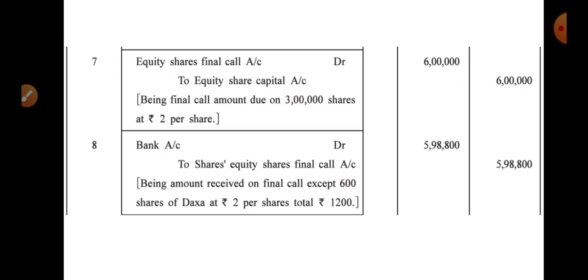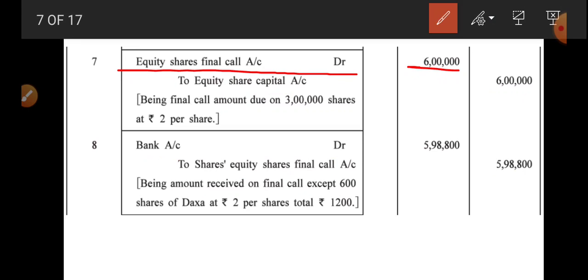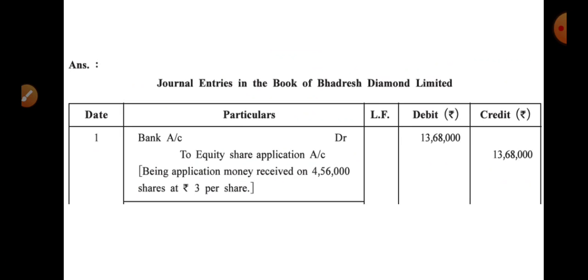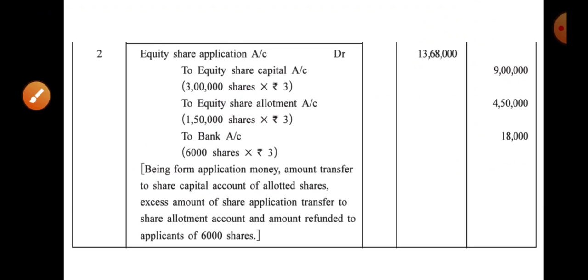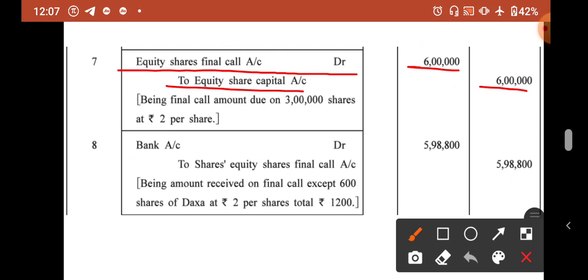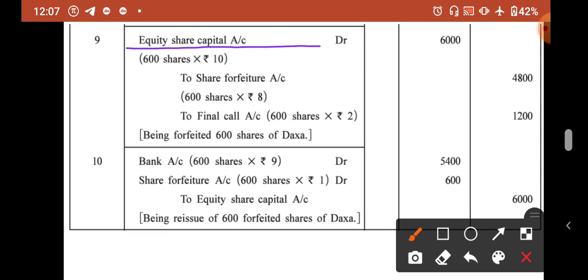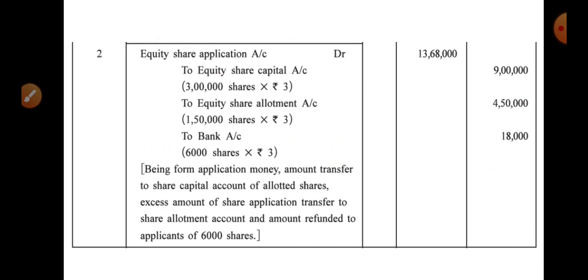Final call is at ₹2 per share on 3 lakh shares = ₹6 lakh. However, Daksha did not pay on 600 shares: 600 × ₹2 = ₹1,200. So Bank receives ₹6 lakh − ₹1,200 = ₹5,98,800. Entry: Bank Account Dr. 5,98,800 / To Equity Share Final Call Account 5,98,800. For forfeiture: Equity Share Capital Account Dr. 6,000 (600 × ₹10) — she paid ₹8 per share (8 × 600 = ₹4,800 to Share Forfeiture Account) and ₹2 per share unpaid (600 × ₹2 = ₹1,200 to Final Call Account).